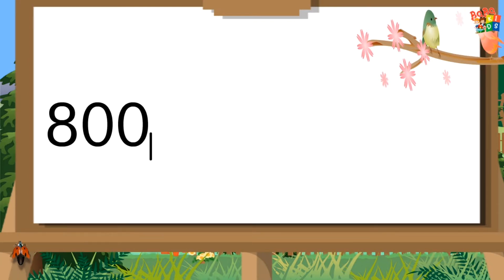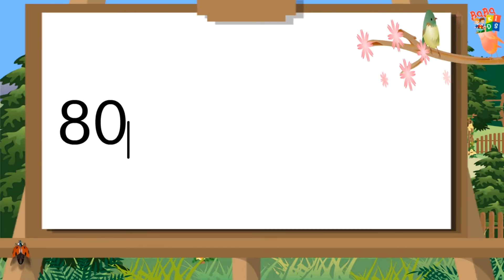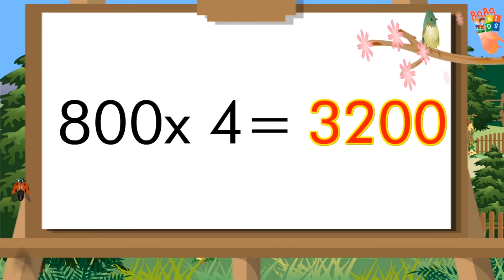800 threes are 2400. 800 fours are 3200.